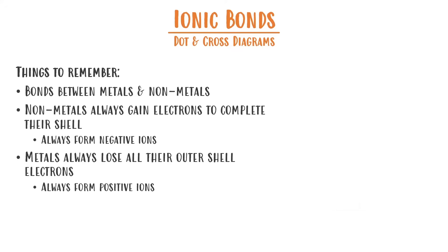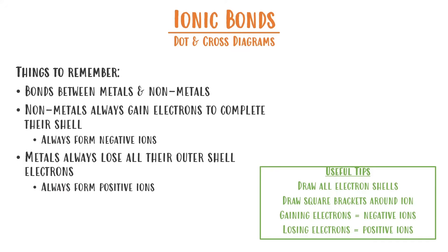Here are a few useful tips. Whenever we're drawing these ions, we need to make sure we draw every electron shell, and then we represent them as ions by putting square brackets around them. If we're gaining electrons, we form negative ions, and if we're losing electrons, we always form positive ions.